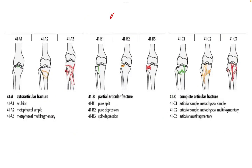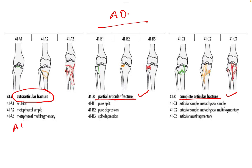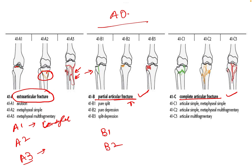The AO classification for the proximal tibia divides fractures into three main types: Type A is extra-articular, Type B is partial articular, and Type C is complete articular. Within Type A: A1 is avulsion (condylar avulsion or tibial spine avulsion), A2 is a simple metaphysis fracture, and A3 is a multifragmentary metaphysis fracture. Within Type B: B1 is a simple split with no depression, B2 is pure depression only, and B3 is split combined with depression.